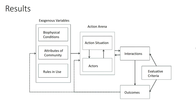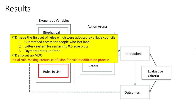The IAD framework lends itself really well to looking at sustainability. Starting with the rules in use: FTK set up the very first rules, which were then adopted by the village council. Three of these rules mean that people who gave up land get guaranteed access each growing season, and there are three growing seasons. For the remaining people, there is a lottery system and payment is done up front. FTK also set up the MDO, which manages the farm. Because of the initial rules set up by FTK, there seems to be some confusion about modification of rules.